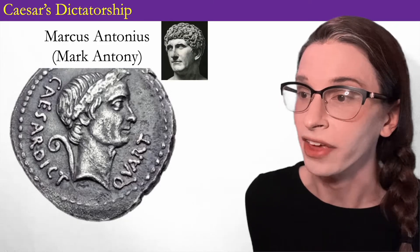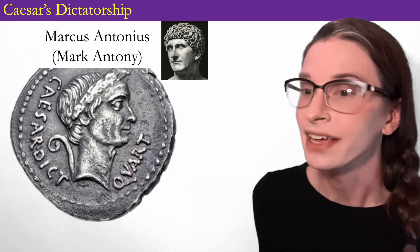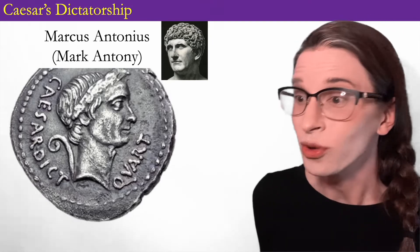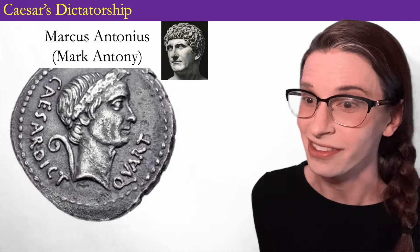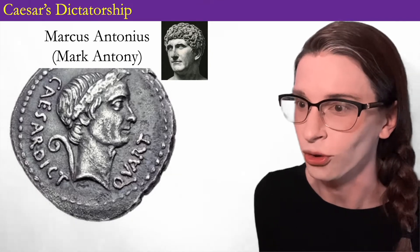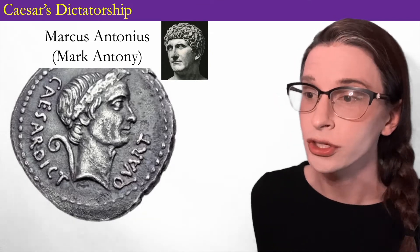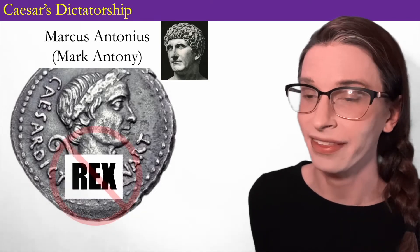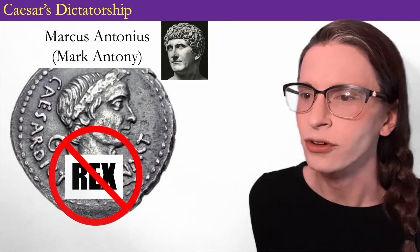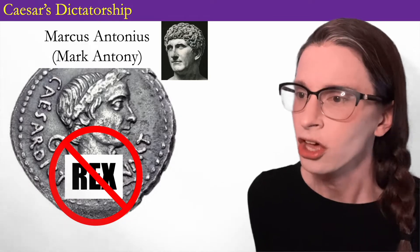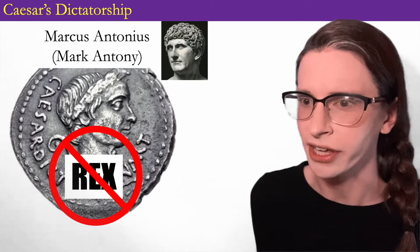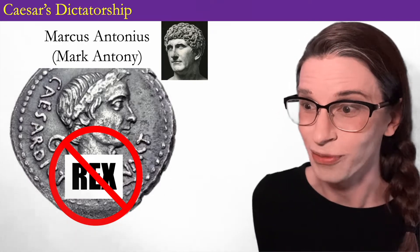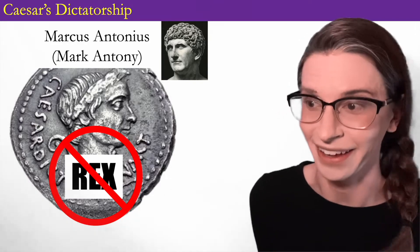His right-hand man, Marcus Antonius, or Mark Antony, is in charge of the new priesthood of Caesar. You can always recognize Mark Antony's statue because he has that ramen noodle hair. The one honor Caesar does not accept is the name of Rex — king. Remember that after the expulsion of the last king, the Romans swore they'd never have a king again. The culture of the Republic is such that Caesar can get away with calling himself a god, but not a king.